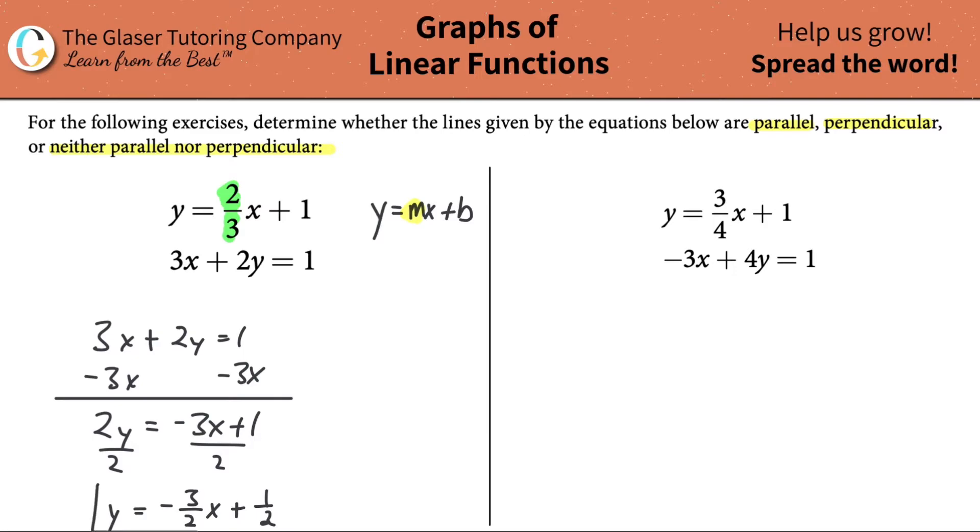So Y will now equal negative 3 over 2X plus 1 half. Now what's the slope? If we notice, this is in that nice Y-intercept form. The slope here is negative 3 over 2.